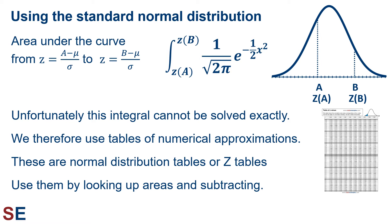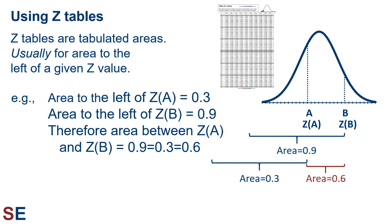These tables of areas are called normal distribution tables, or z tables. The most common format is to indicate the area under the curve to the left of a particular z value. We can then calculate areas for ranges by looking up values and subtracting. Of course, if you're doing this using a computer, it has all those tables in a database and references them without showing you. Z tables are tabulated areas usually for the area to the left of a given z value — though that's not a guarantee, as sometimes this information is presented differently. It's important to understand why this procedure works: we can figure out the area between a and b by finding the area to the left of the z value for a and the z value for b and subtracting. If the area to the left of z(a) is 0.3 and the area to the left of z(b) is 0.9, then the area between those z values must be 0.6.